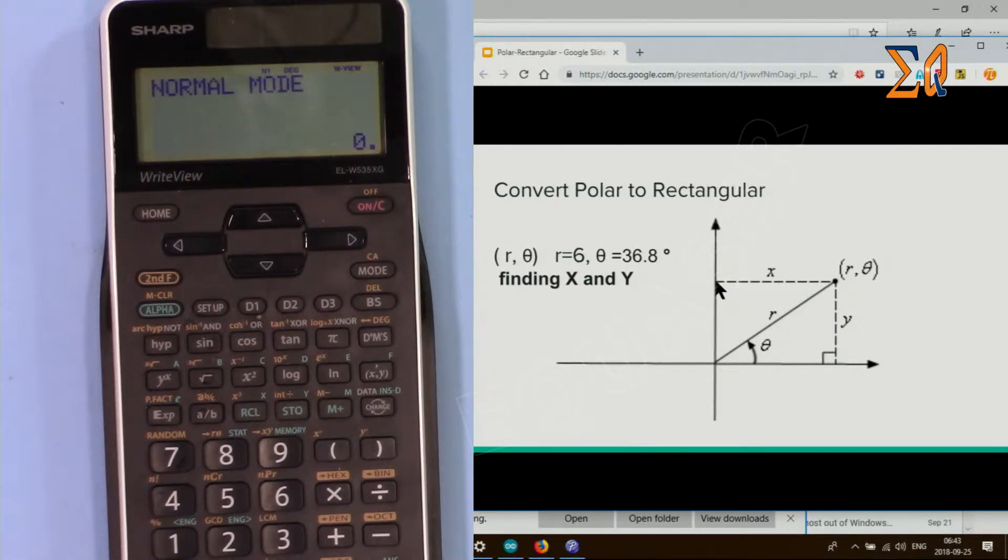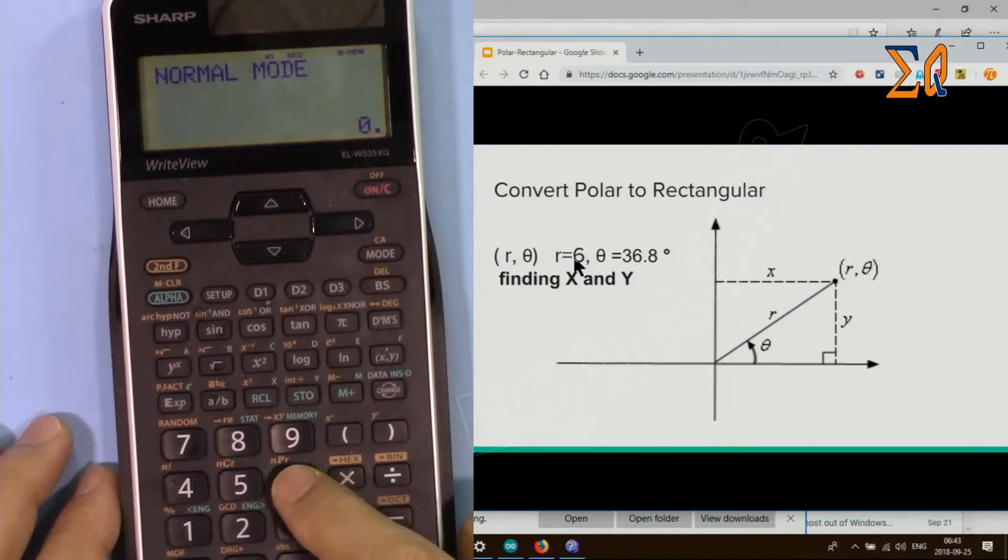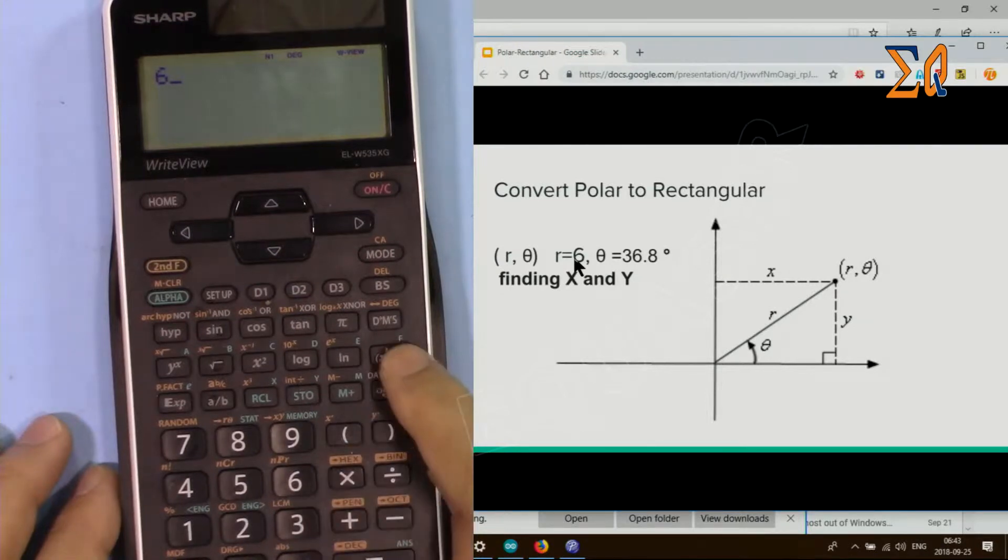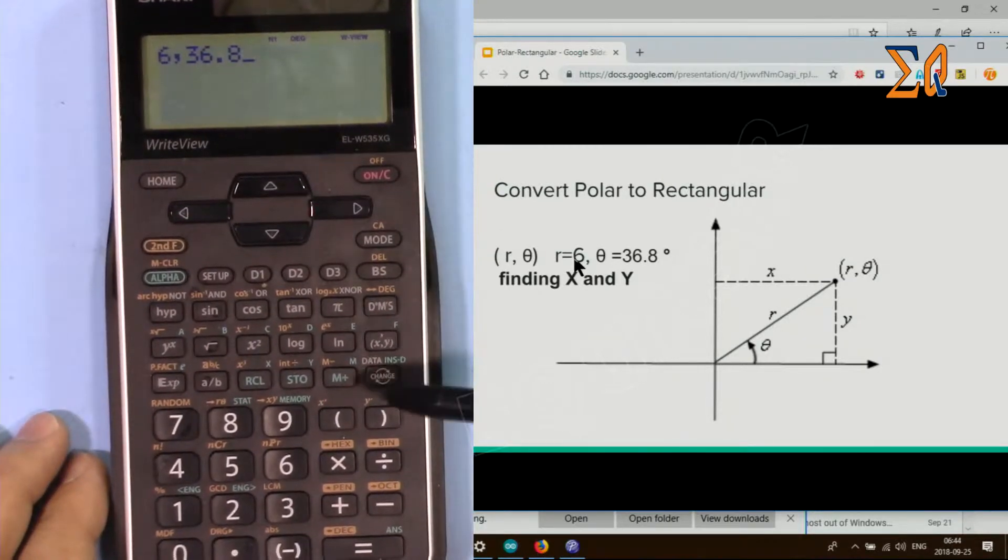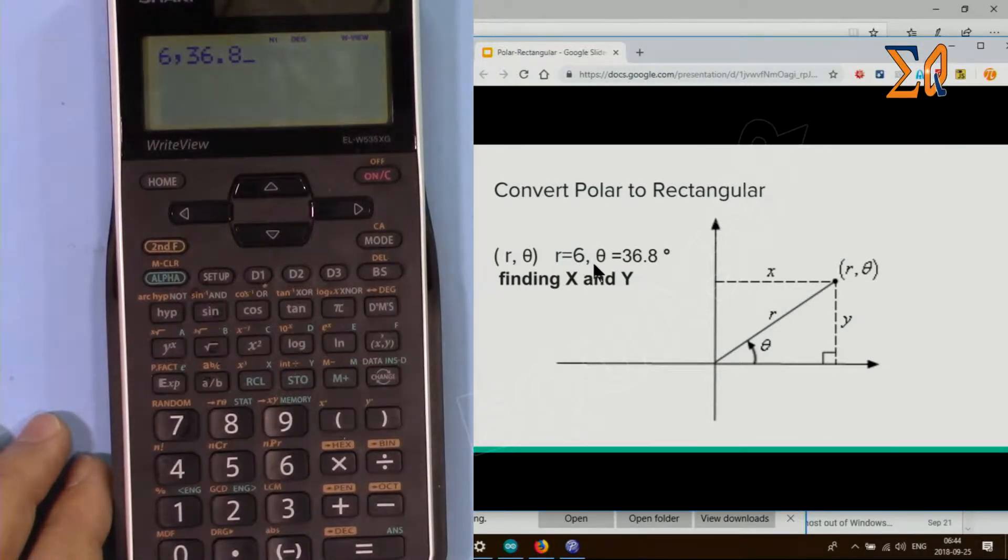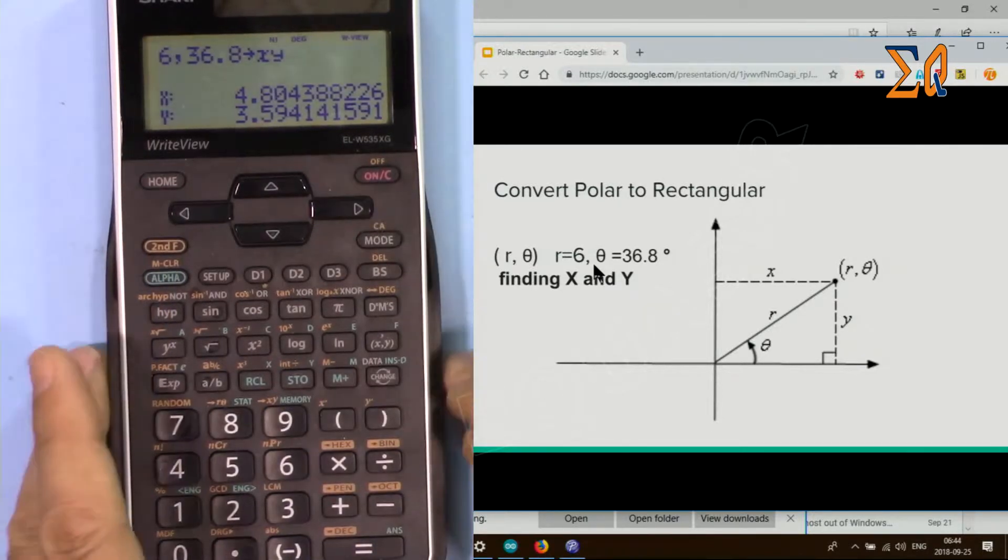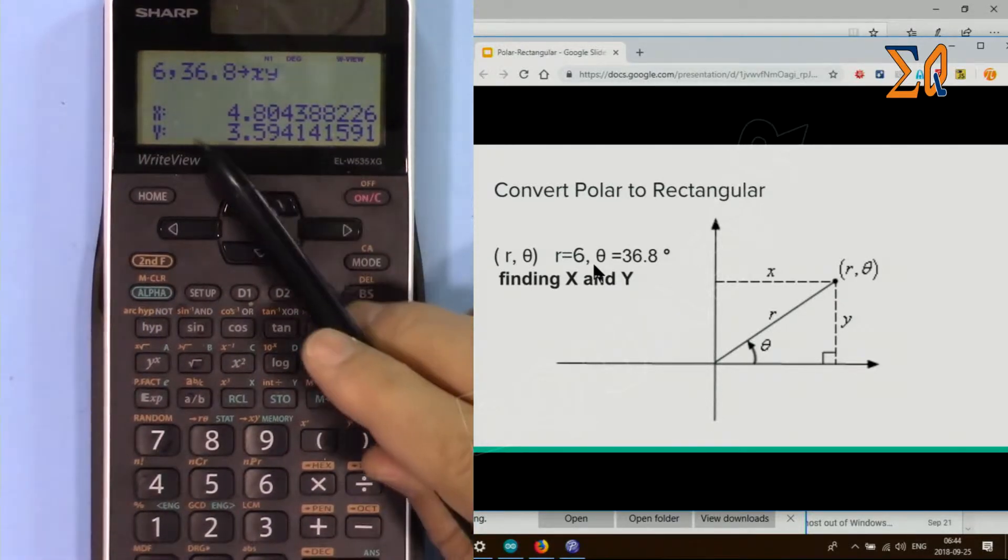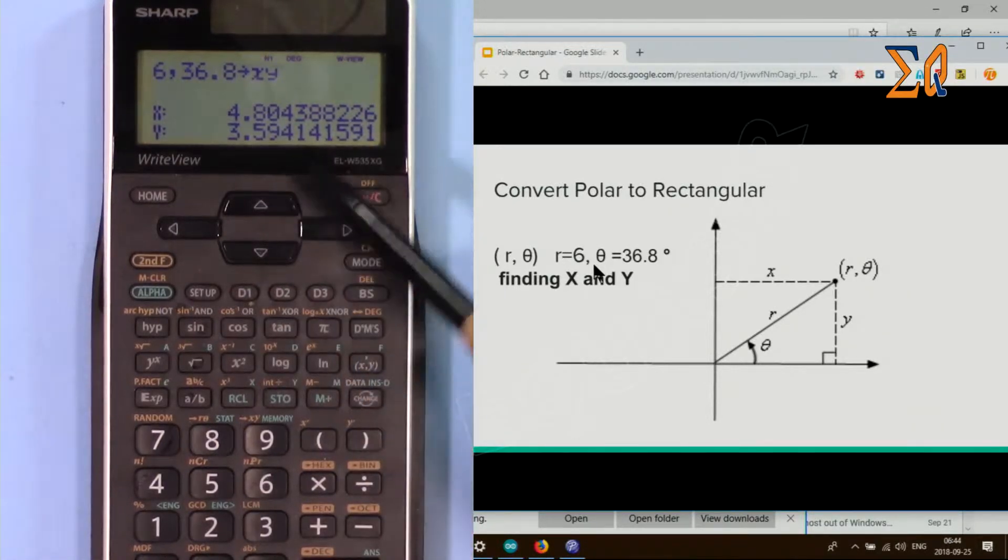First, enter 6, then comma, then 36.8. Then press Shift and 9. This arrow to X and Y means convert to X and Y, and the other arrow means convert to R and theta. In this case we have R and theta but want X and Y, so press second function and 9. Once you press it, you'll see X is 4.8043 and Y is 3.59.